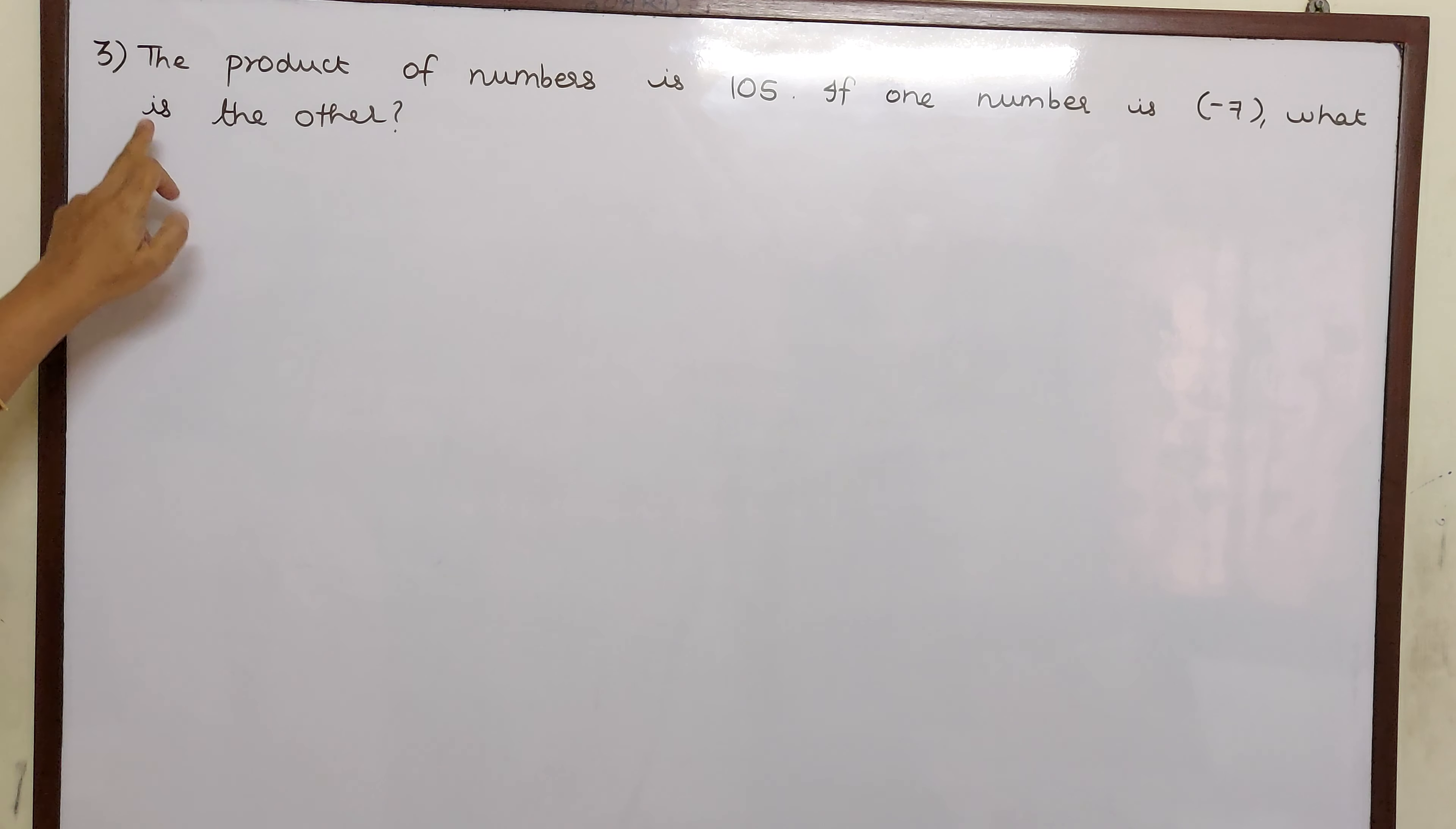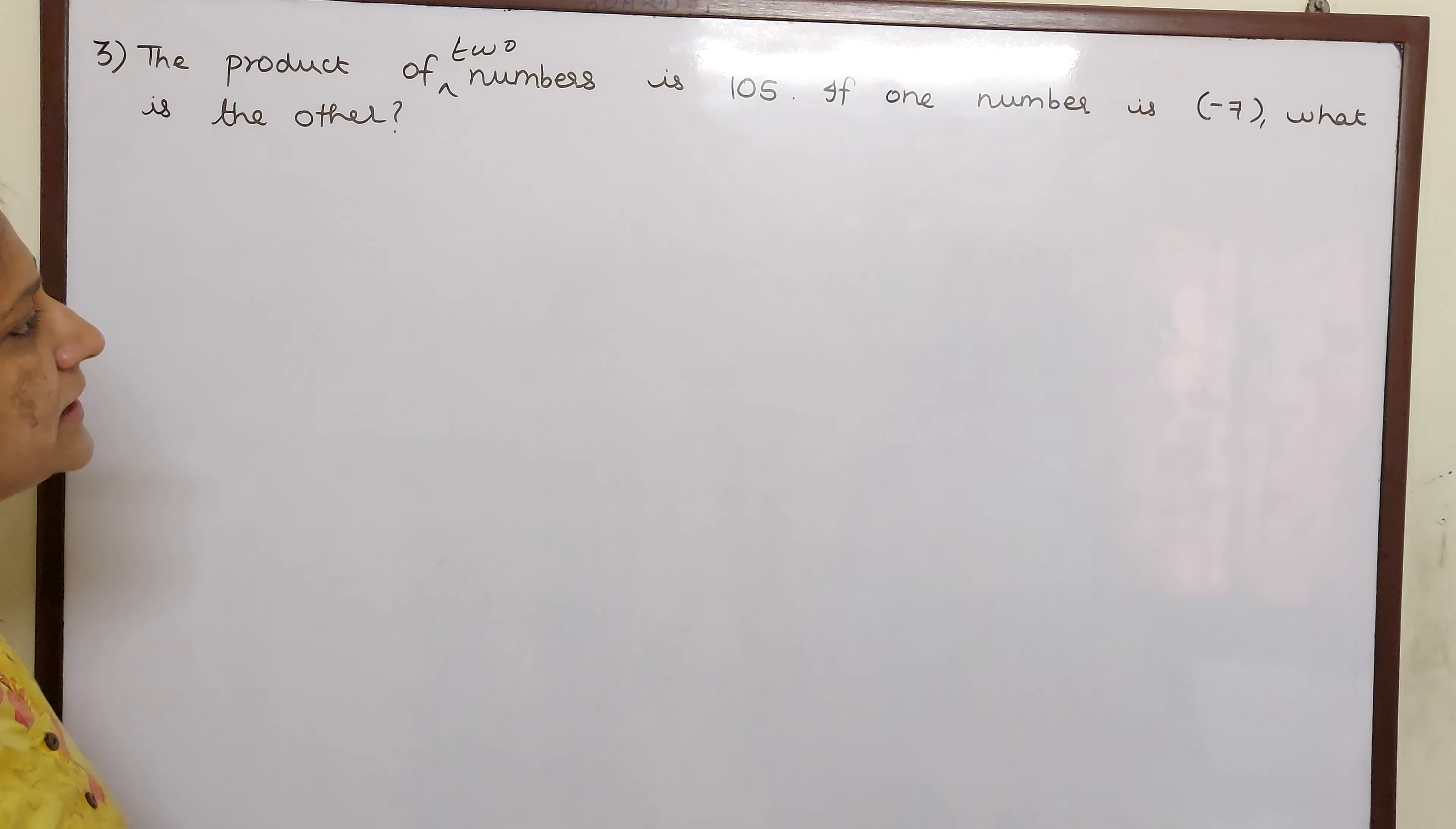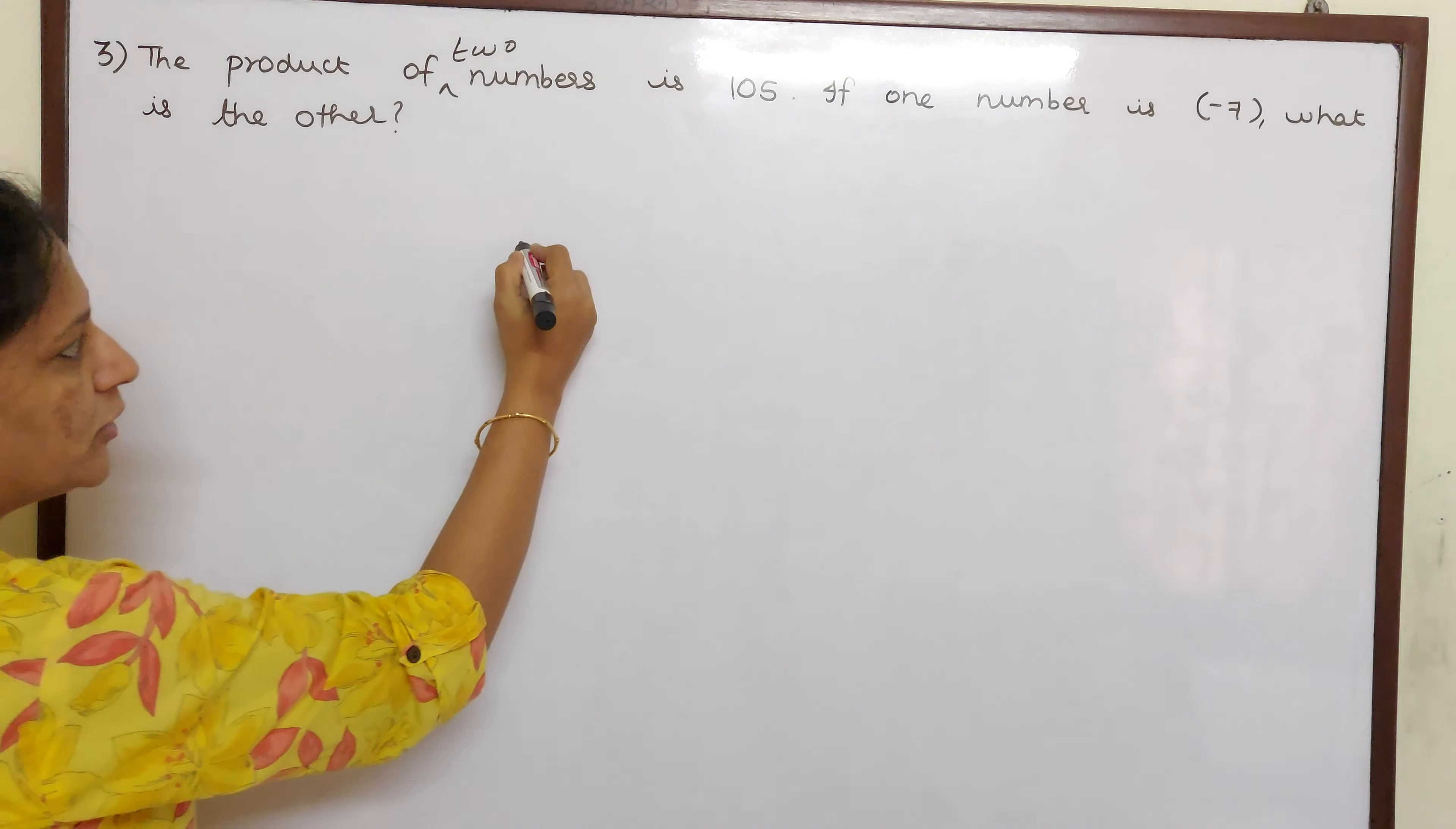Now our next problem is, the product of two numbers is 105. If one number is minus 7, what is the other? So what is the meaning of product children? Product means multiplication. So when you are multiplying two numbers, the answer is equal to 105.